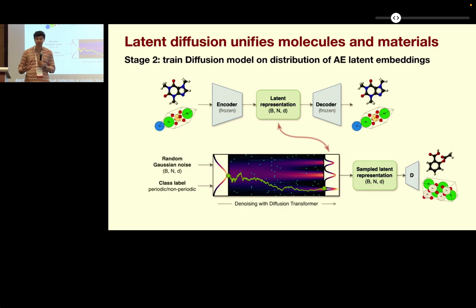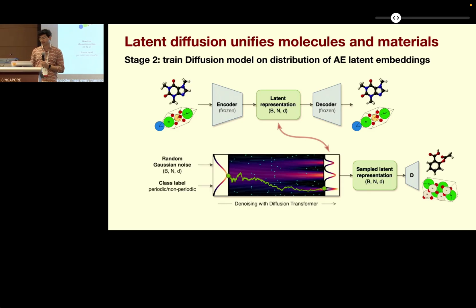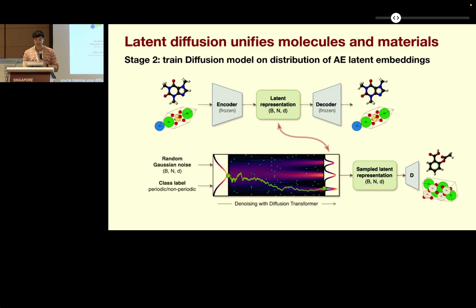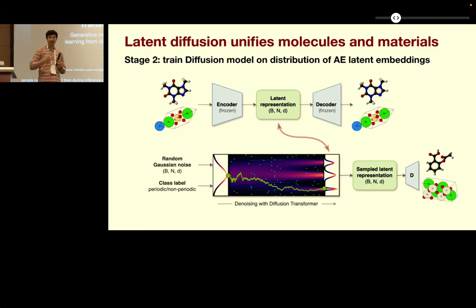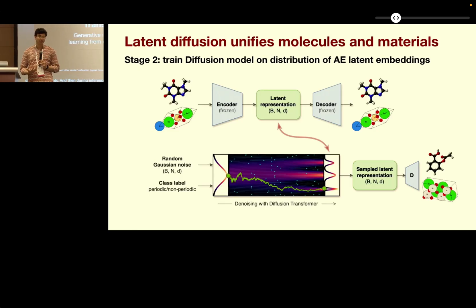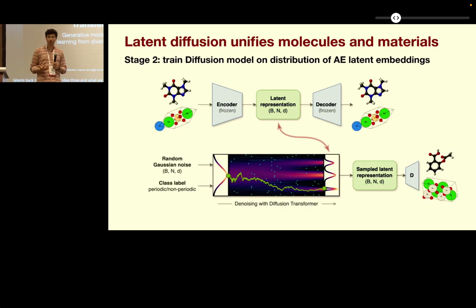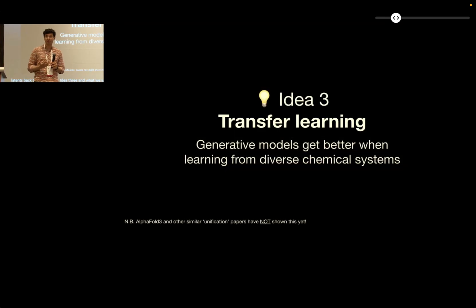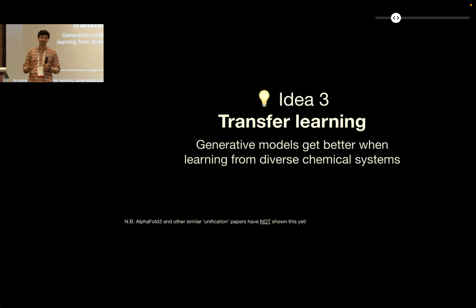So you're training your diffusion denoiser — your diffusion transformer — on latents to sample new latents. During inference time, you can reconstruct from latents back to real systems. This latent space can be equivariant or learned, as you like. The powerful part is that you can then use simple Gaussian latent diffusion or flow matching, scaled up as we've learned to do for images, applied to molecular systems. You can also do classifier-free guidance to condition these models.